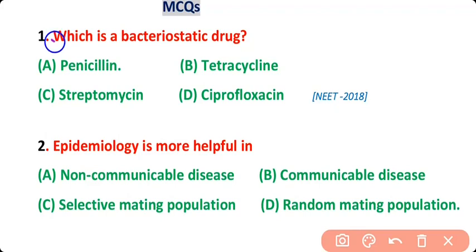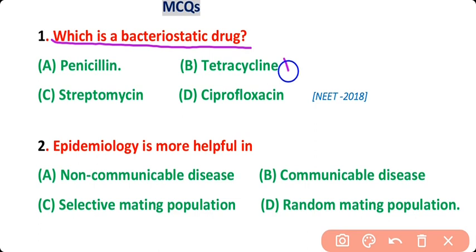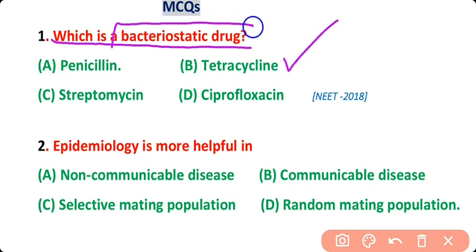Question number 1: Which is a bacteriostatic drug? Options: Penicillin, Tetracycline, Streptomycin, Ciprofloxacin. The correct answer is option B. Tetracycline is a bacteriostatic drug.